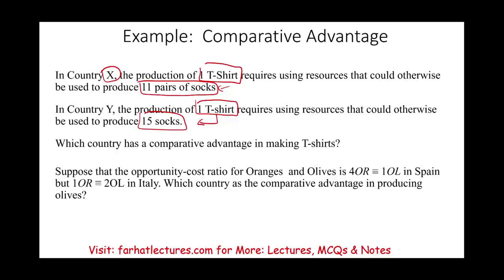Let's look at another example. The opportunity cost ratio X over Y for oranges and olives is 4 tons of oranges for 1 ton of olives in Spain. So in Spain, to produce 1 ton of olives, they must give up 4 tons of oranges. In Italy, the ratio is 1 ton of oranges to produce 2 tons of olives. Which country has the comparative advantage in producing olives?